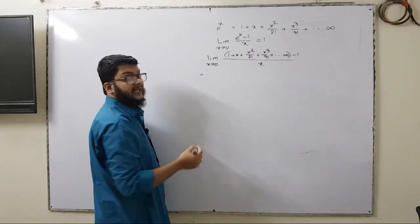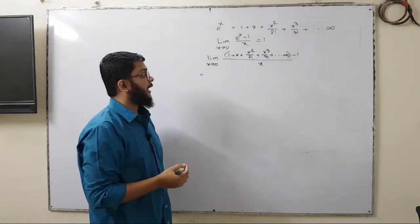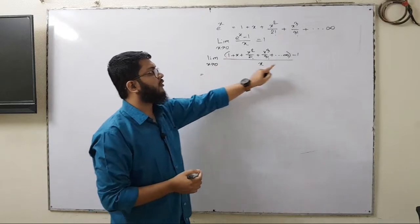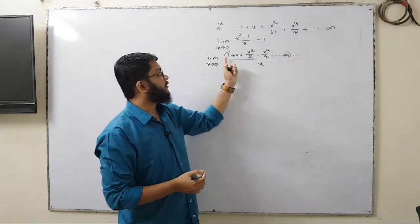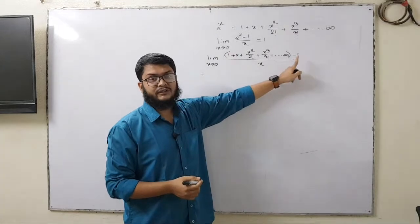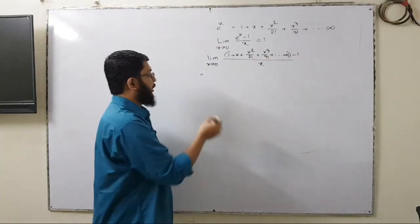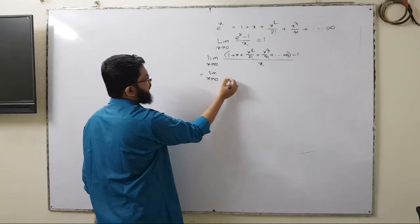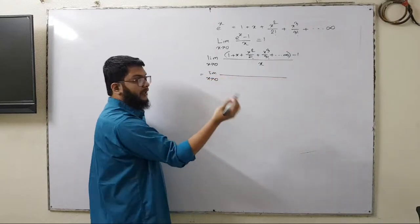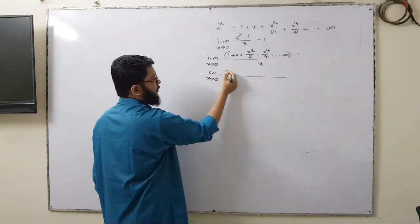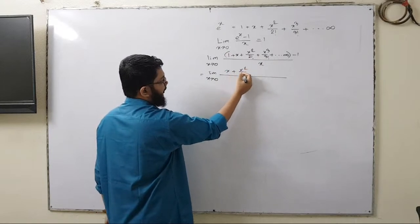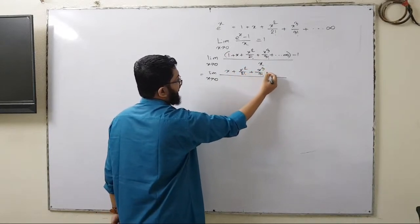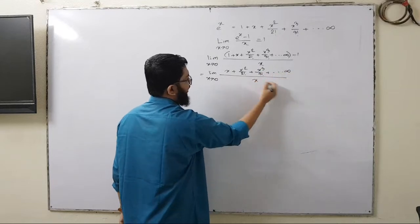In the next line, we have a 1 here and another 1 — this is positive 1 and this is negative 1 — so these two 1s cancel out. The next line will have the remaining terms other than these two 1s. So we have x plus x squared by 2 factorial plus x cubed by 3 factorial, all the way to infinity, divided by x.